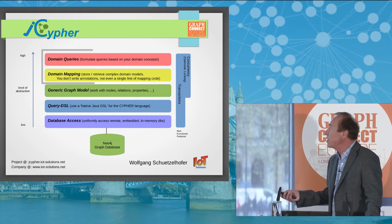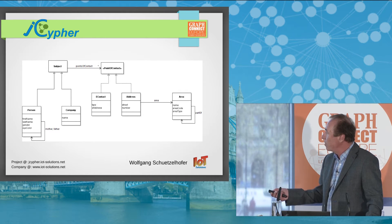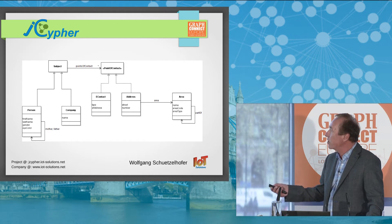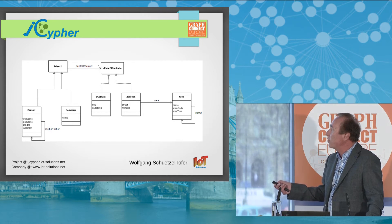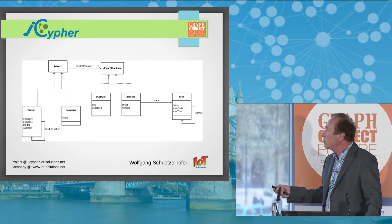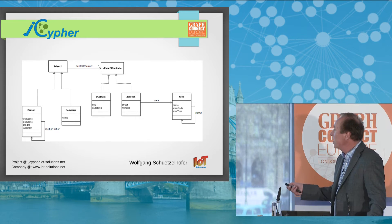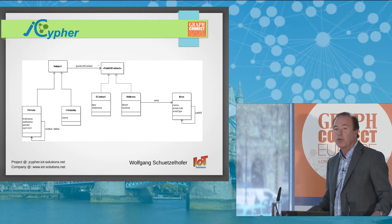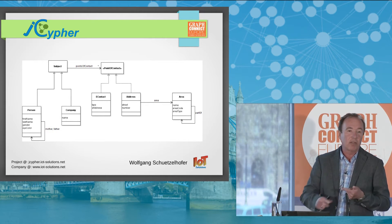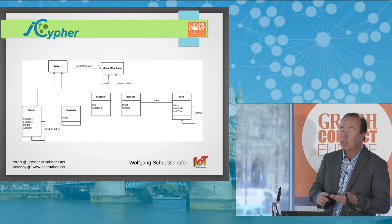Now let's have a look at some examples. Imagine you have a model like this: you have companies and persons which are kinds of subjects. A subject is related via points of contact to points of contact. A point of contact can be an electronic address or a postal address, and a postal address is situated within an area, for example a city. An area can be part of another area — a city can be part of a state, a state part of a country, a country part of a continent, part of planet Earth.